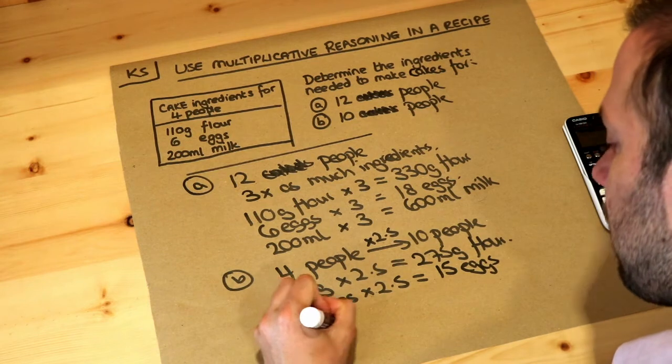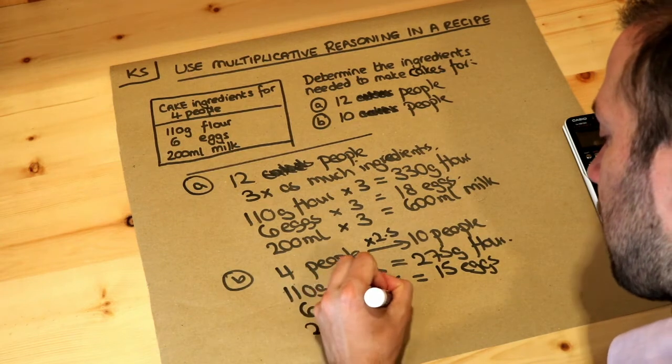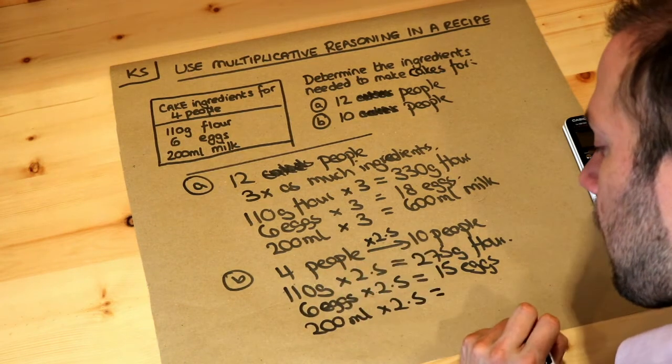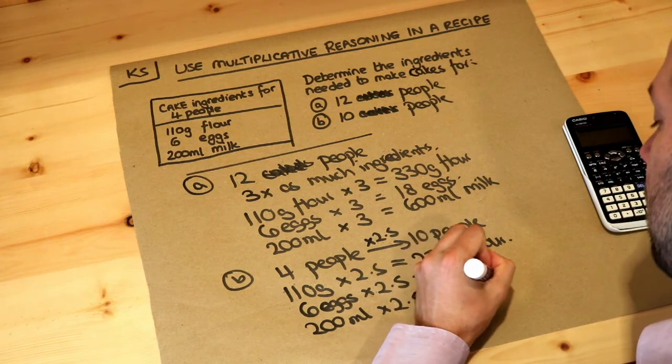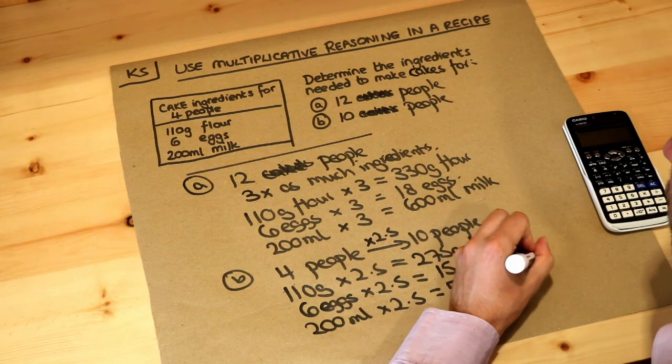Finally, 200 milliliters of milk, if you times that by 2.5, that's going to give you 500 milliliters of milk. And that is the final answer.